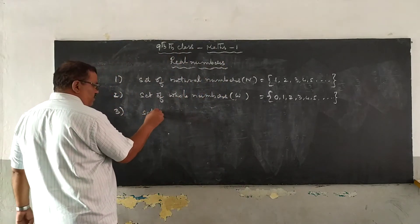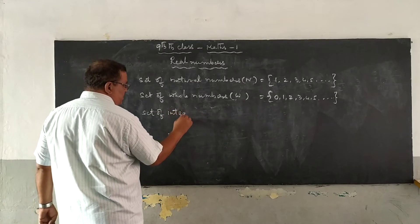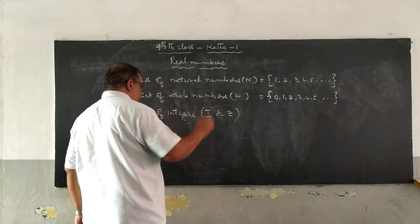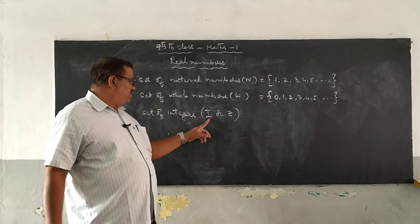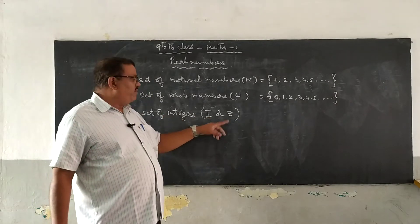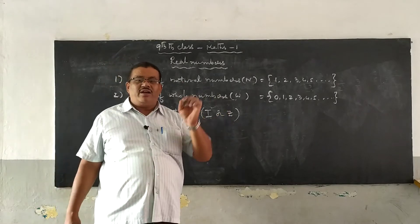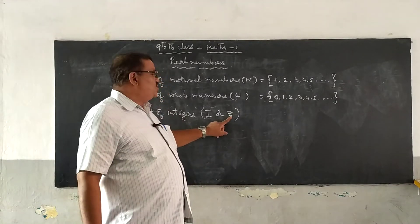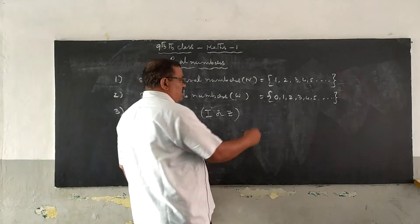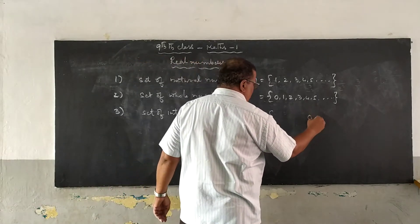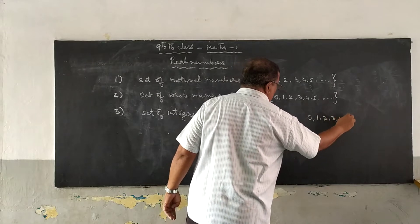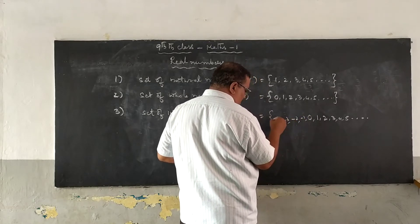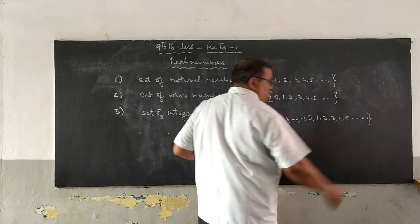So, the set of integers — how are integers obtained? These are represented by I or Z. Why do we represent integers with two different letters? This is general notation. Integers' first letter is I, so no problem. Why should we represent with Z? A mathematician named Zahlen introduced these numbers, and in honor of him, we represent integers with Z. So, the integers are: 0, 1, 2, 3, 4, 5, and so on, and towards the negative direction: minus 1, minus 2, minus 3, and so on. These numbers are said to be the set of integers.